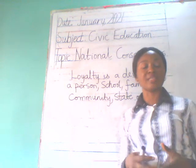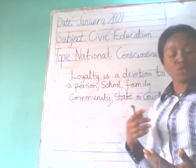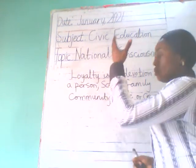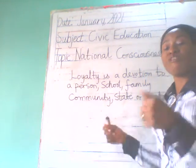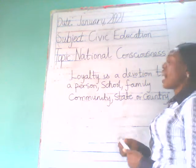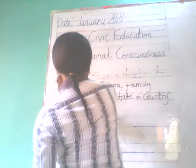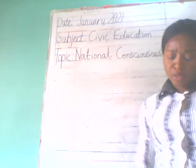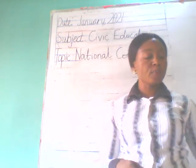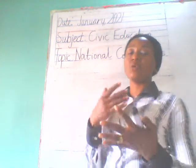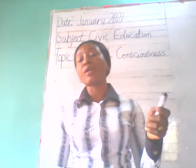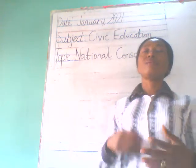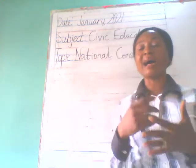National consciousness has to do with being aware and responsive to one's surroundings — your state, your nation, your school, your family. So we have evidences of loyalty: things that show that you are loyal to your family, to your school, to your nation, and to your state. Number one is obedience. Part of the keywords is obedience. When you are obedient, you are respecting the laws that are in the constitution.